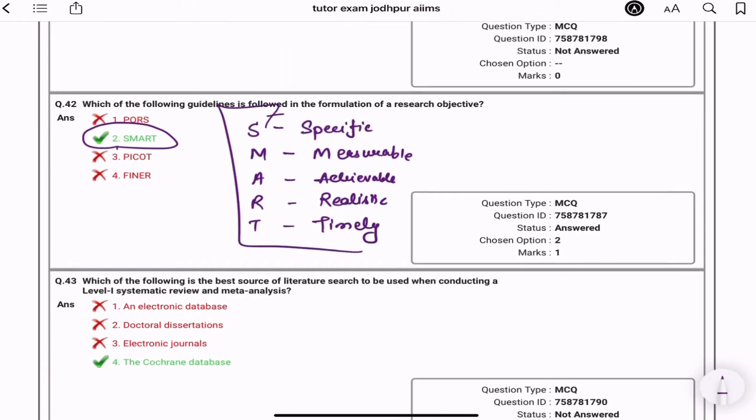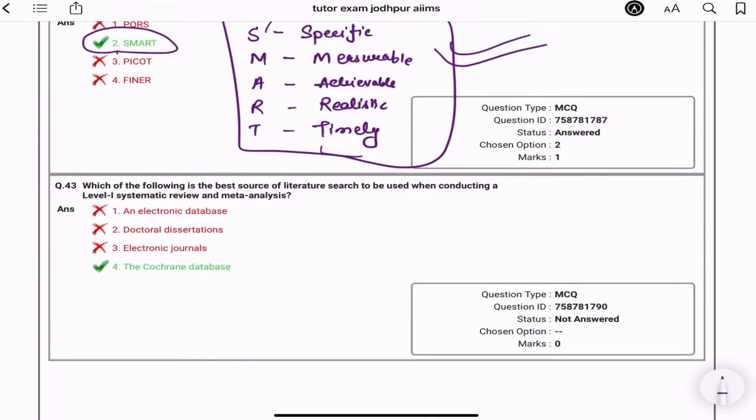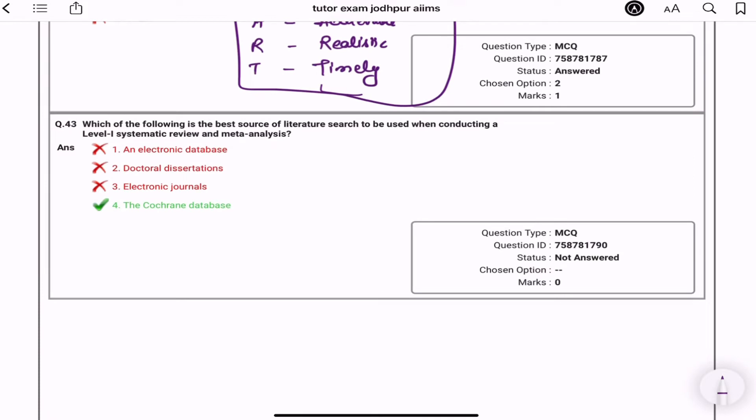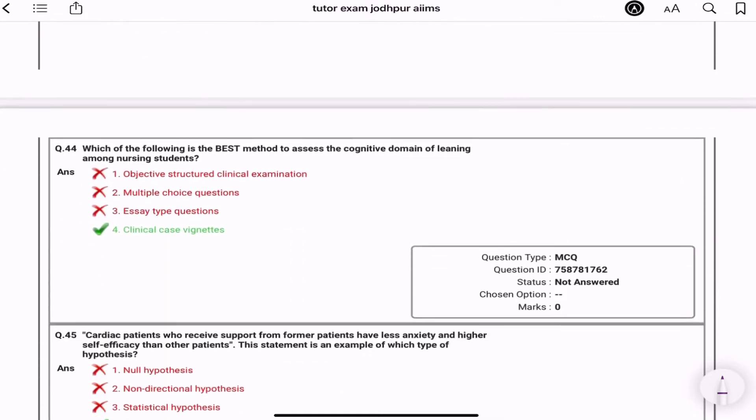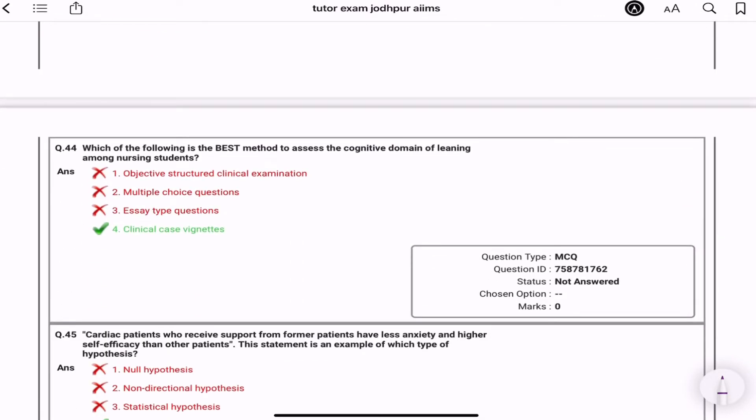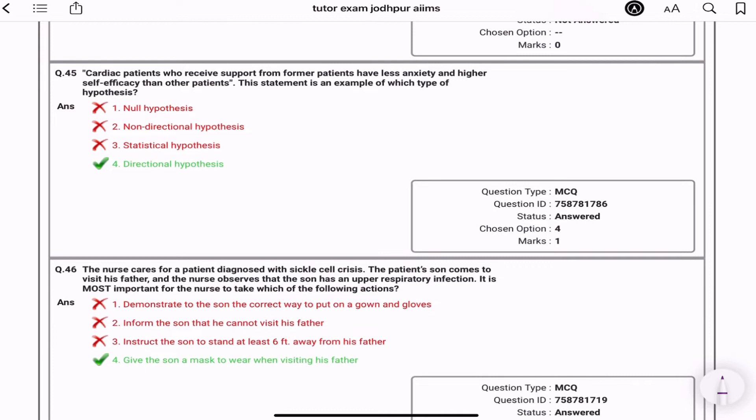Which is the following is the best source of literature search to be used when conducting a level and systematic review and meta-analysis? The Cochrane database. Which of the following is the best method to assess the cognitive domain of learning among nursing students? Clinical case. Which needs cardiac patient would receive support from former patient have less anxiety and higher self-efficiency than other patients. This statement is example of which type of hypothesis? Directional hypothesis.